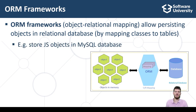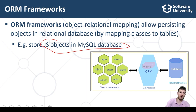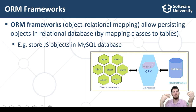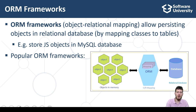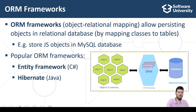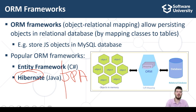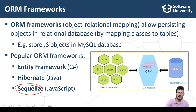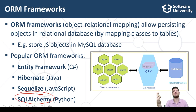Examples of ORM usage include persisting JavaScript objects in MySQL, Java objects in PostgreSQL, or C# objects in MS SQL Server. Popular ORM frameworks include Entity Framework — the most popular ORM for C# and .NET; Hibernate and Java Persistence API for Java; Sequelize — a popular server-side JavaScript ORM; and SQLAlchemy — a popular ORM framework for Python.